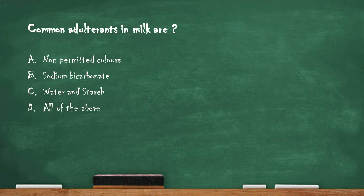Next question on common adulterants in milk: the right answer is option C — water and starch. Water and starch are the two main common adulterants that are mostly added in milk.